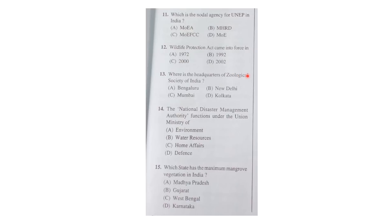The third question from the environment section was: where is the headquarter of the Zoological Society of India? The correct answer is Kolkata — the headquarter of the Zoological Society of India is in Kolkata.